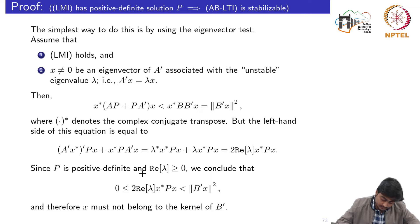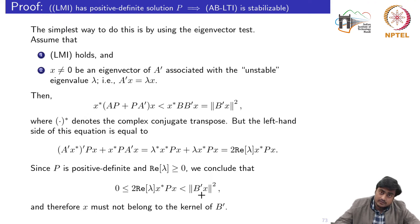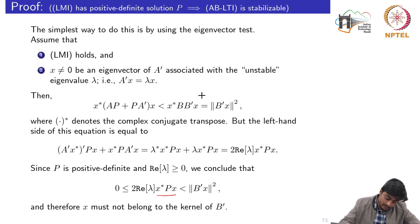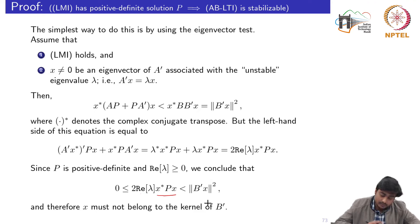Since P is positive definite and the real part of lambda is greater than or equal to zero, we can conclude that twice the real part of lambda times x-star P x would be less than the squared norm, because the squared norm is positive and P is positive definite. Since lambda is on the right-hand side it is also positive, but from this linear matrix inequality we have the less-than part, which is always greater than or equal to zero. Therefore x must not belong to the kernel of B-transpose. If x belonged to the kernel of B-transpose we would have B-transpose x equal to zero, but it is not equal to zero.